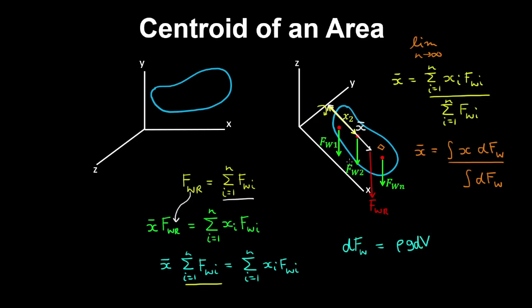And because we're trying to find the centroid of an area, we can take this body as having a uniform thickness or a unit thickness. So therefore the differential volume element having a uniform thickness can be written as the thickness out of the plane by dA, being the differential area.